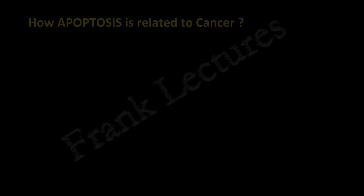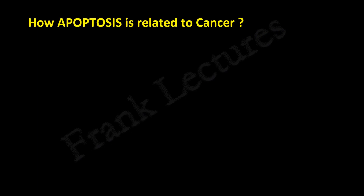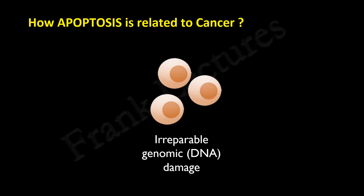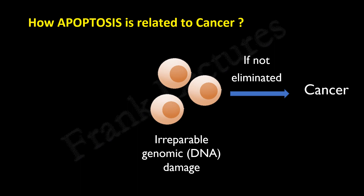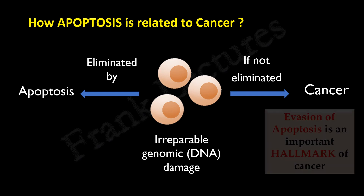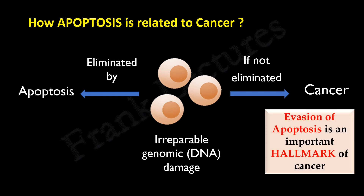Let's understand how apoptosis is related to cancer. There are cells in which DNA gets damaged and this genomic damage is irreparable. If such cells survived in the body, they can undergo unregulated cell division, and if not eliminated, they can result in the development of cancer. Apoptosis is a major mechanism to eliminate cells in which DNA is damaged, organelles are stressed, and cancer genes are overexpressed. It is important to note that the evasion of apoptosis is one important hallmark of cancer.